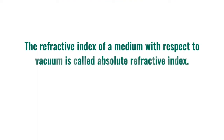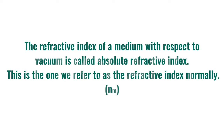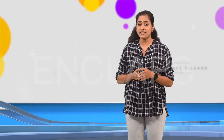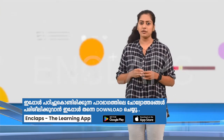What happens if we consider vacuum as the medium for comparison? We know that light has the maximum velocity in vacuum, so it is taken as a standard. The refractive index of a medium with respect to vacuum is called the absolute refractive index. This is the one we normally refer to as the refractive index, and it is represented as Nm. On comparing two media, the one with higher refractive index is called the denser medium and the one with lower refractive index is called the rarer medium.